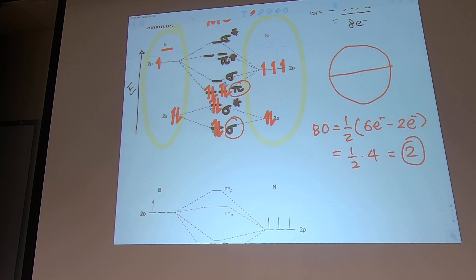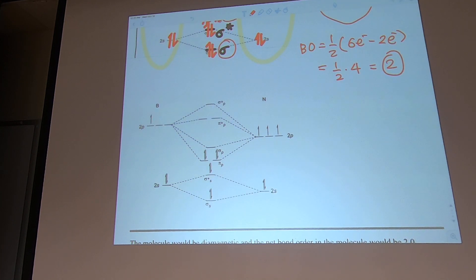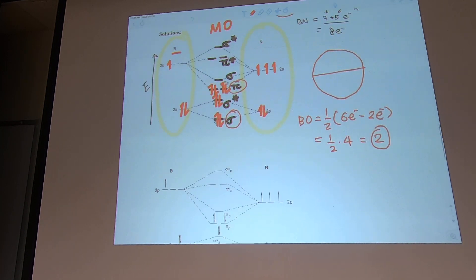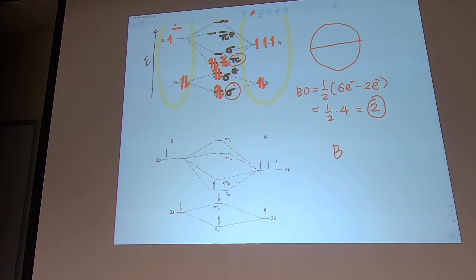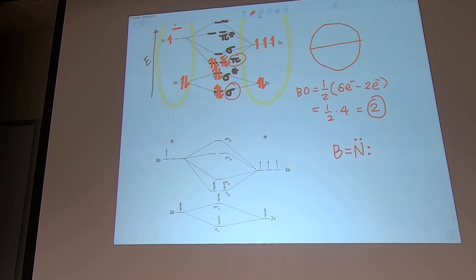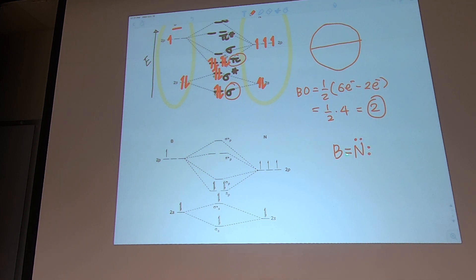BN has a bond order of 2, meaning a double bond. Going back to the Lewis structure — let's check nitrogen. Nitrogen satisfies the octet rule. Counting the electrons used: one, two, three, four, five, six, seven, eight — all eight electrons are accounted for.